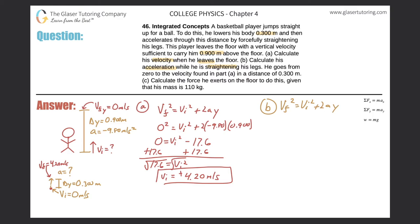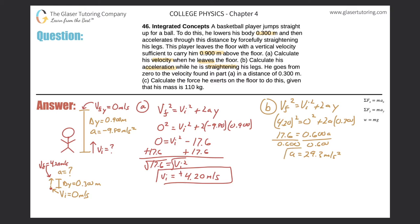For Part B: (4.20)² = (0)² + 2 × a × 0.300. That gives us 17.6 = 0.600a. Dividing both sides by 0.600, the acceleration is 17.6 ÷ 0.6 = 29.3 meters per second squared. That takes care of Part B.